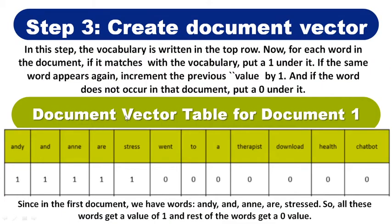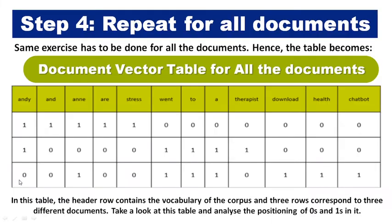The occurrences are counted in the document vector table: Andy — 1, any — 1, are — 1, stressed — 1, and the rest of the words not present in document one get a zero. Note that 'stressed' appears in its base form 'stress' here, because the process of lemmatization or stemming has converted it. This way you get all unique words in the document vector table with their counts. Step 3 is then followed by step 4: repeat all the same steps for all documents.